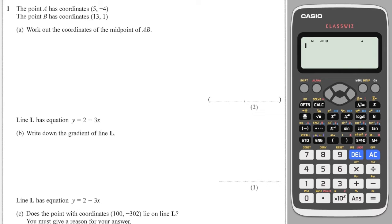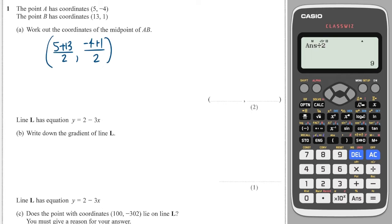We'll get started with question one. We've been asked to work out the midpoint of AB. The midpoint is the average position, so we take the X coordinates, add them together and find the average: 5 plus 13 is 18, divided by 2 gives 9. For the Y coordinates: minus 4 plus 1 divided by 2 gives minus 3 over 2.